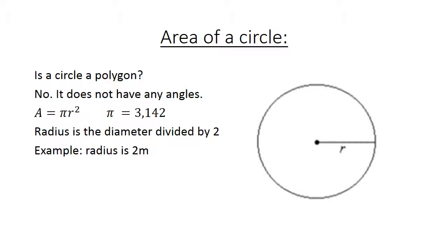Example: radius is 2 meters. Area equals pi r squared equals 3.142 times 2 meters squared equals 3.142 times 4 meters squared equals 12.568 meters squared.